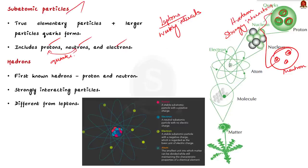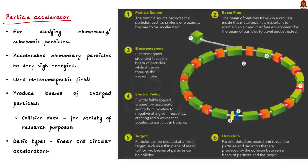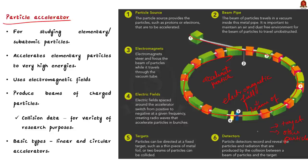One such machine that helps in studying elementary or subatomic particles is the particle accelerator. This machine accelerates elementary particles like electrons or protons to very high energies using electromagnetic fields. The acceleration is close to the speed of light. Through this acceleration, particle accelerators produce beams of charged particles, which are then smashed either onto a target or against other particles, and the data from these collisions are studied for a variety of research purposes.